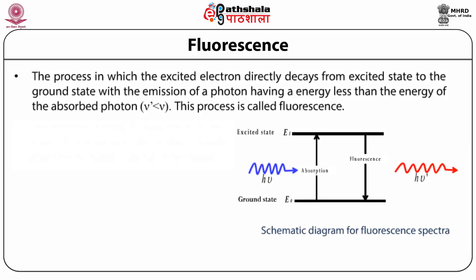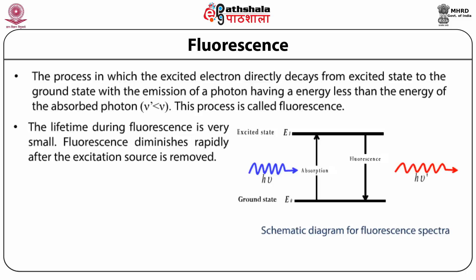Fluorescence: the process in which the excited electron directly decays from the excited state to the ground state with emission of a photon having energy less than the energy of the absorbed photon (nu prime is less than nu) is called fluorescence. This takes place when the ground state and the excited state have the same multiplicity. The materials that show fluorescence are called fluorophores. The lifetime during fluorescence is very small and fluorescence diminishes rapidly after the excitation source is removed.